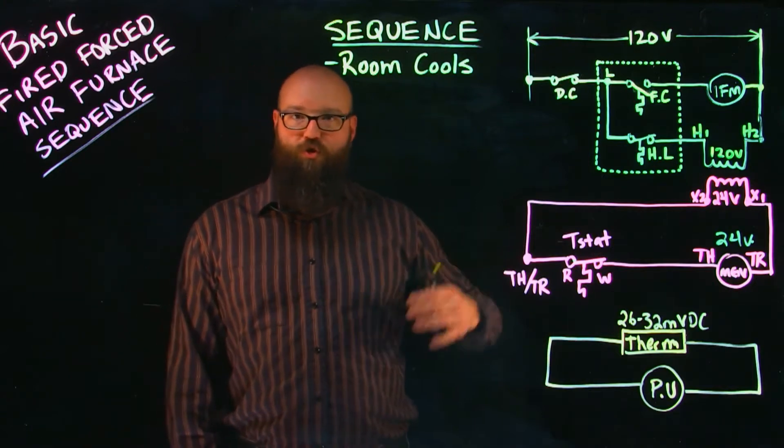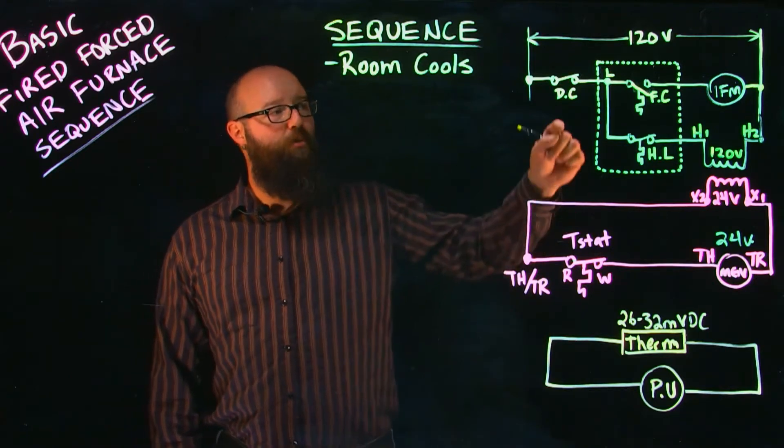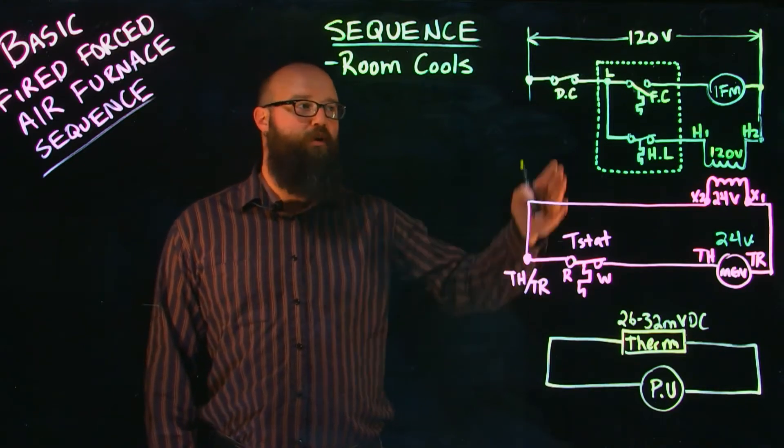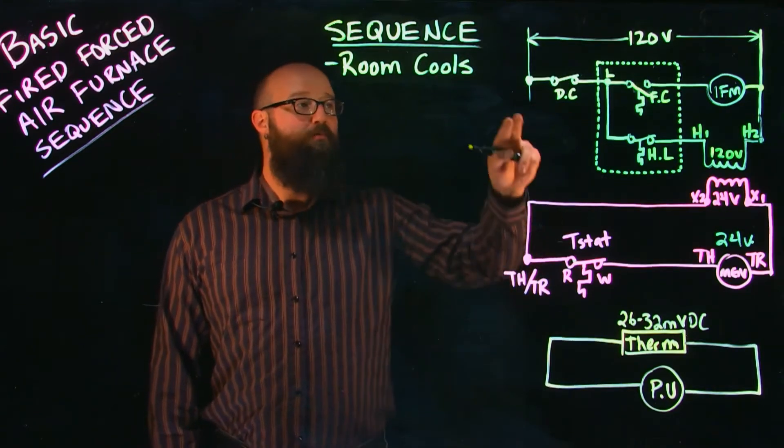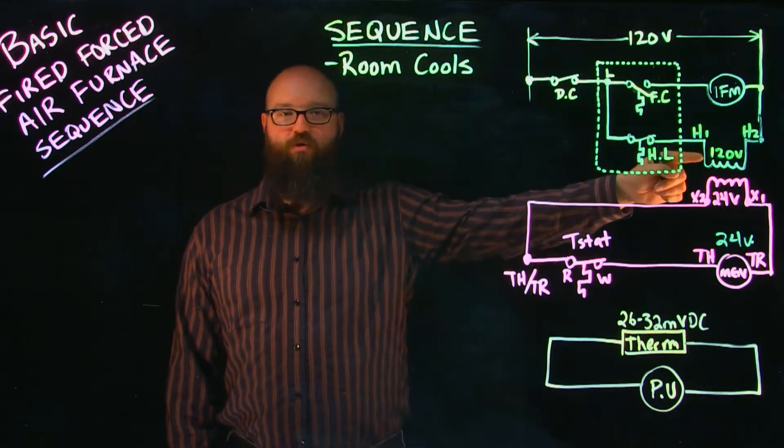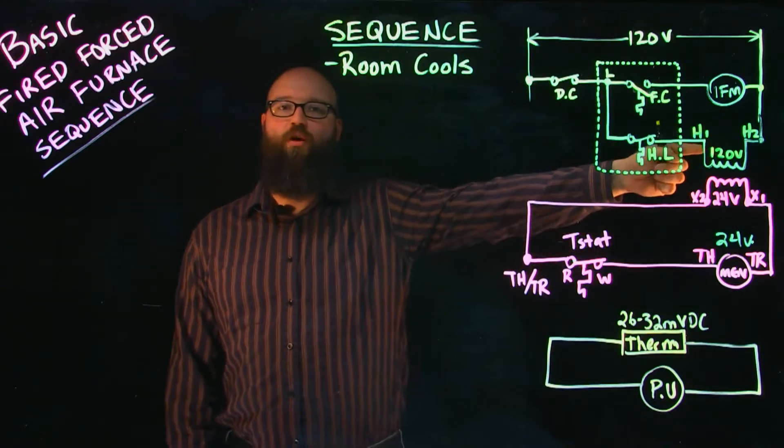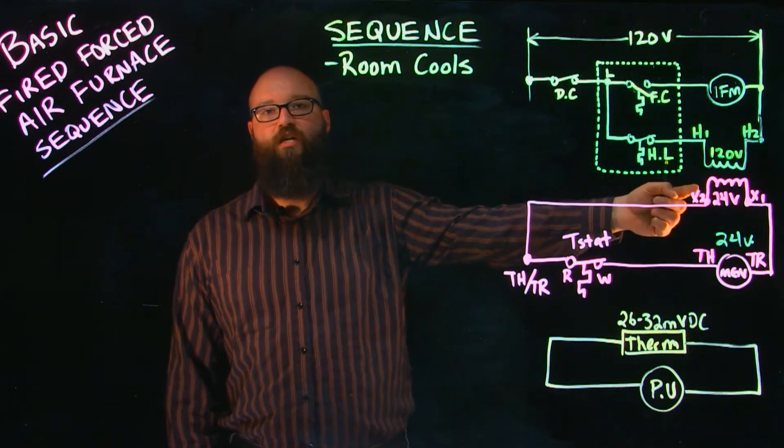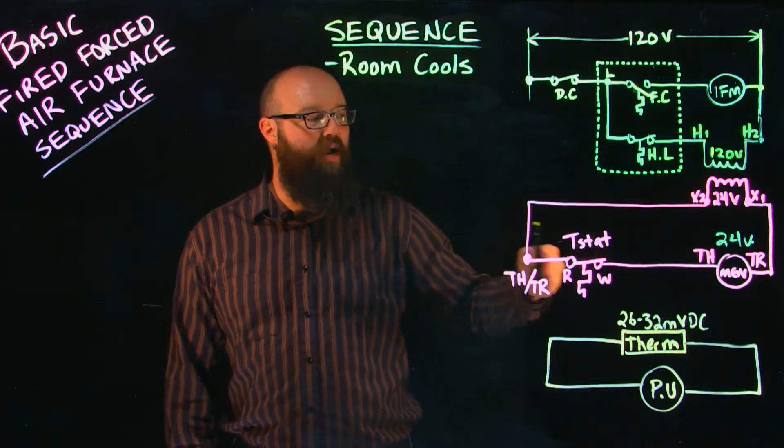Now a couple of points to show you before we get rolling here. My disconnect I've got shown in the closed position which would normally be shown on a schematic in the open position, but we can see I have power through my high limit to the 120 volt primary side of my transformer which I have 24 volts on the secondary of my transformer which feeds my control circuit.